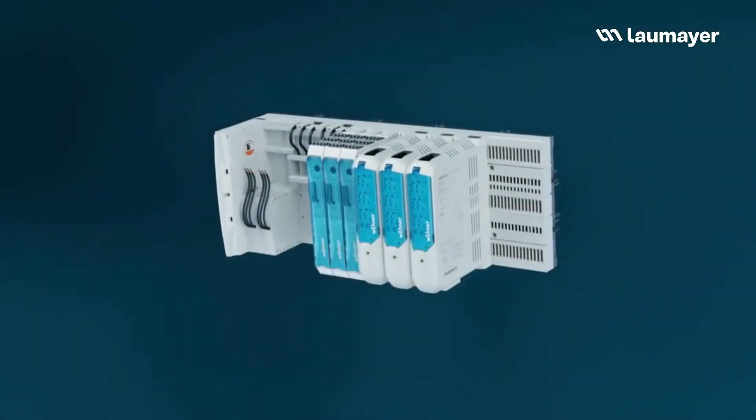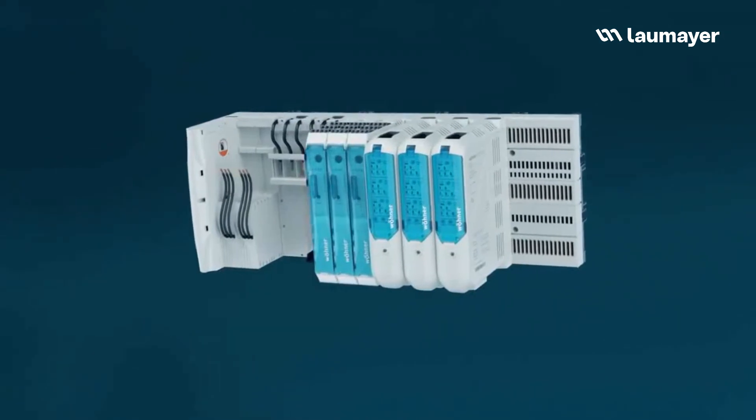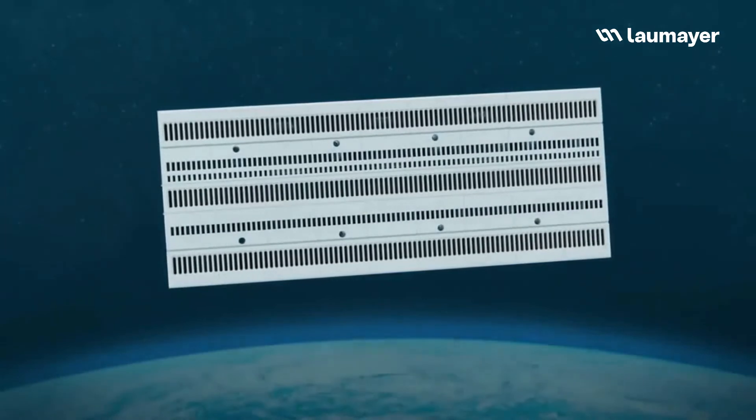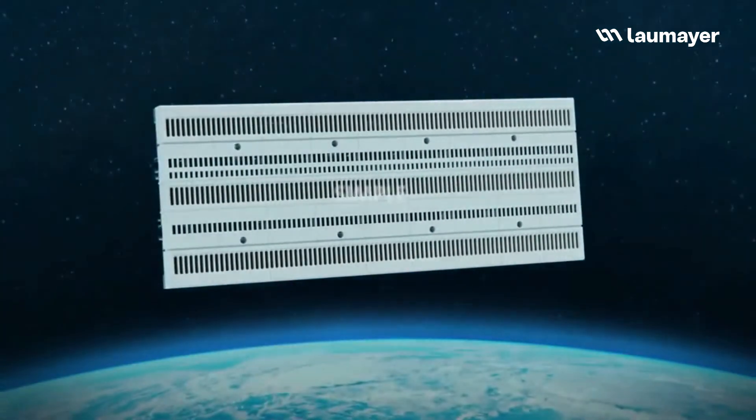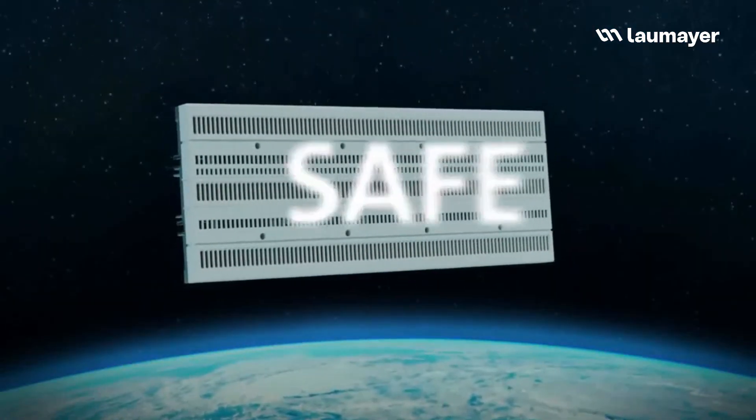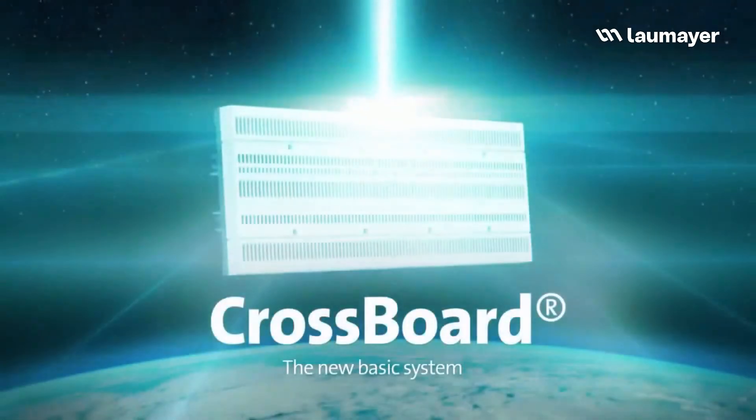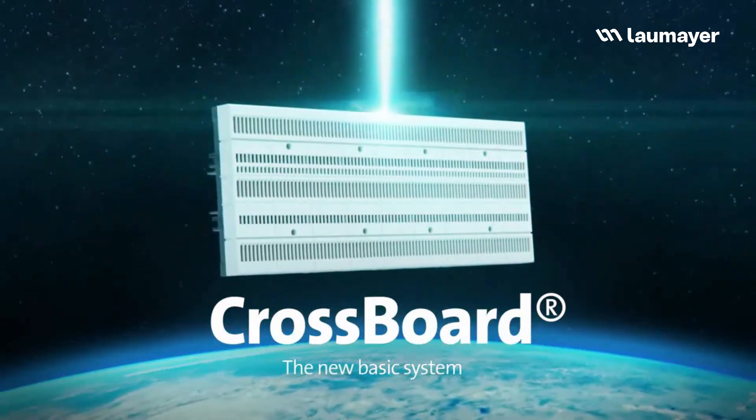Cross Board, the new basic system from Verna, is the ideal solution for control technology and power distribution up to 125 amps. Simple. Safe. Fast. Compatible. This is Cross Board.